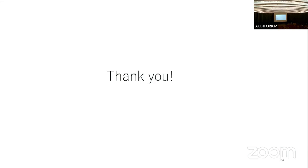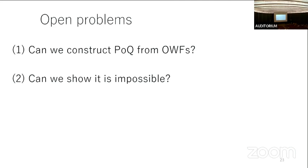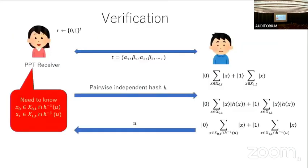Question: Can you comment on why you need BPP^NP and not just NP or MA? Answer: The reason is you have to find certain elements, and you need to query an NP oracle many times to find both x0 and x1. I don't remember the exact algorithm right now, but that is why BPP^NP is needed — you query the NP oracle multiple times.